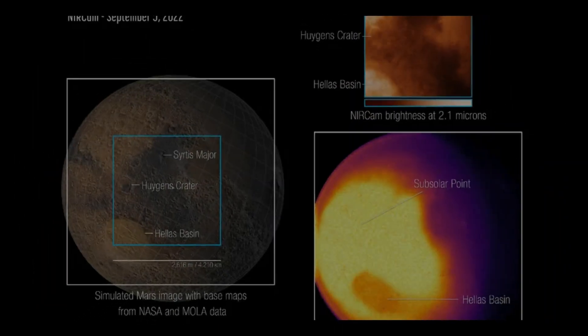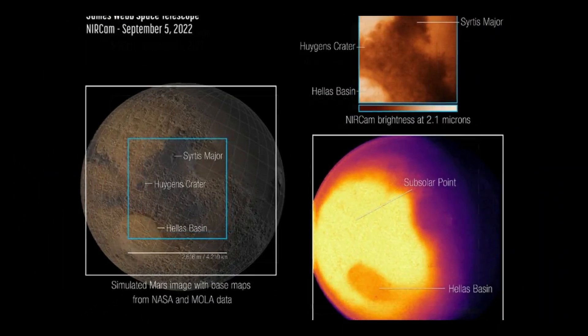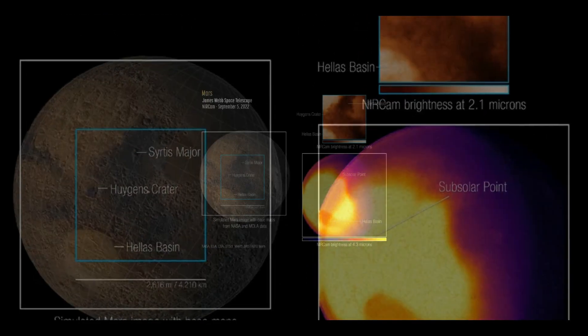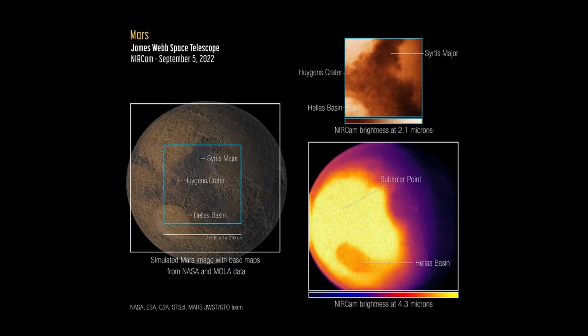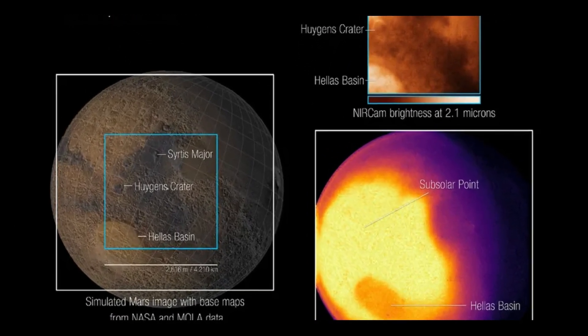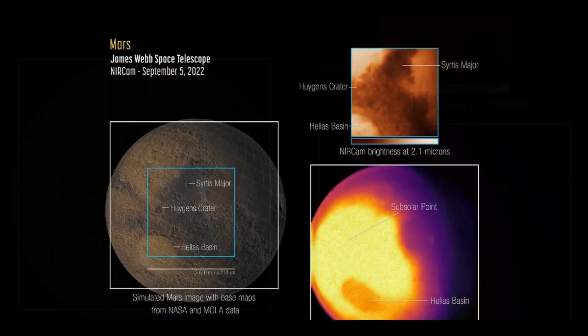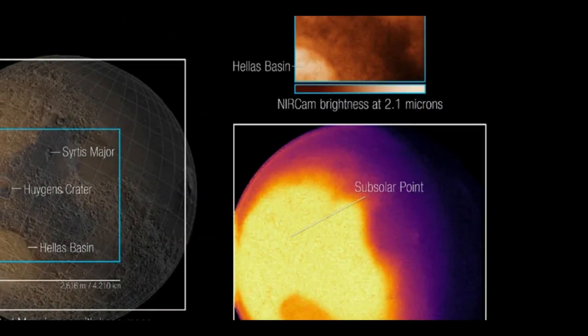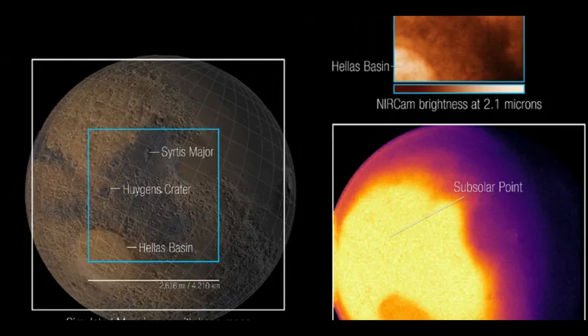Webb's near-infrared camera, NEARCAM, captured images of Mars' observable disk, the side of the planet lit by the sun and facing the telescope, and could provide planetary scientists with a unique view of Earth's close neighbor, delivering data that can be used in conjunction with observations made by rovers like NASA's Perseverance and craft in Martian orbit.